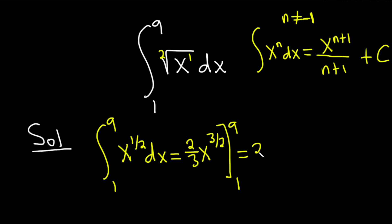Let's leave the 2 thirds out here and let's go ahead and plug in stuff. So first you plug in the 9 so we get 9 to the 3 halves. Then we subtract and we plug in the 1 so we get 1 to the 3 halves.